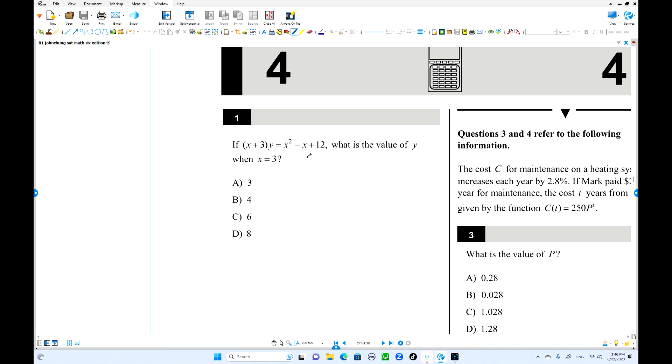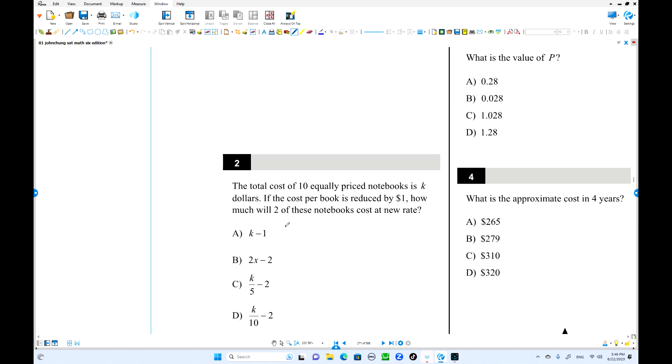What is the value of y when x equals 3? x is given by 3, so put this number in there. 3 plus 3 is 6y, x is 3, that is 9, minus 3, and plus 12. So 21 minus 3 is 18, and divide by 6, y equals 3. Choice A is the answer.